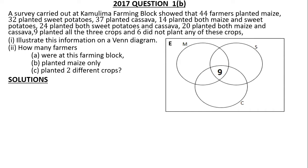Start with the intersection of all three crops — place 9 there to represent farmers who planted all three crops. Then, 14 planted both maize and sweet potatoes, so subtract 14 minus 9, which gives us 5. Then 24 planted both sweet potatoes and cassava, so 24 minus 9 gives us 15. Then 20 planted both maize and cassava, so 20 minus 9 gives us 11.